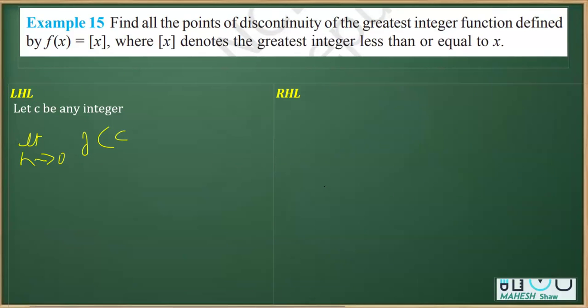Now if I plug in this value into the function [x], it's going to be [c - h]. If there is an integer, for example, say 3 is an integer, and from which if I remove